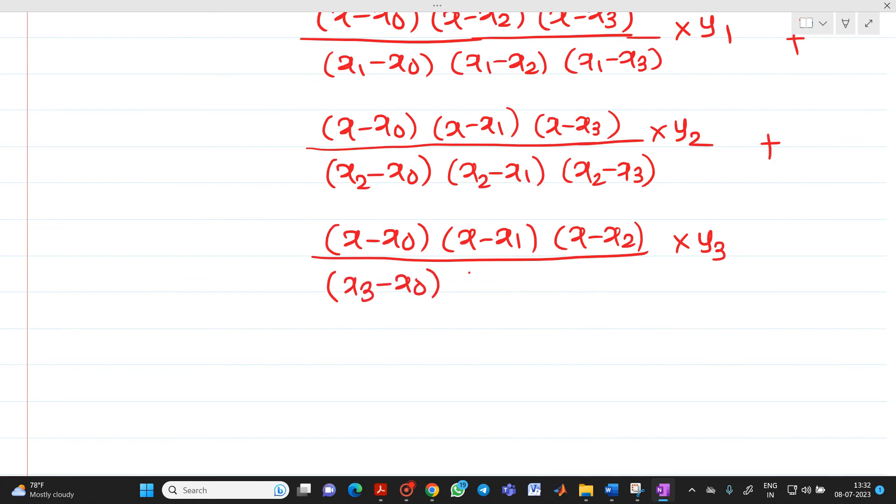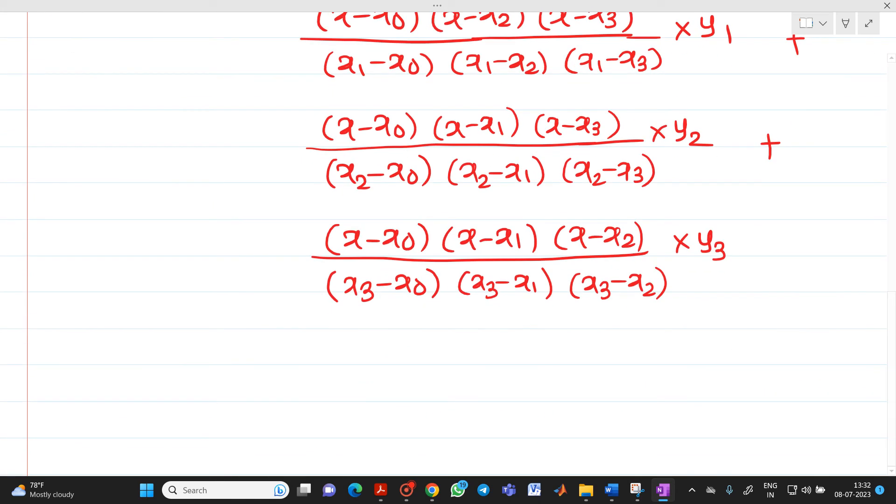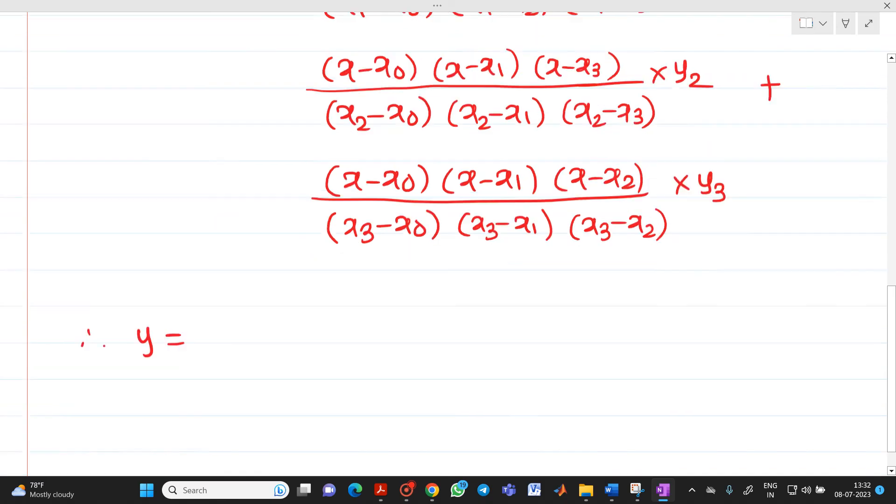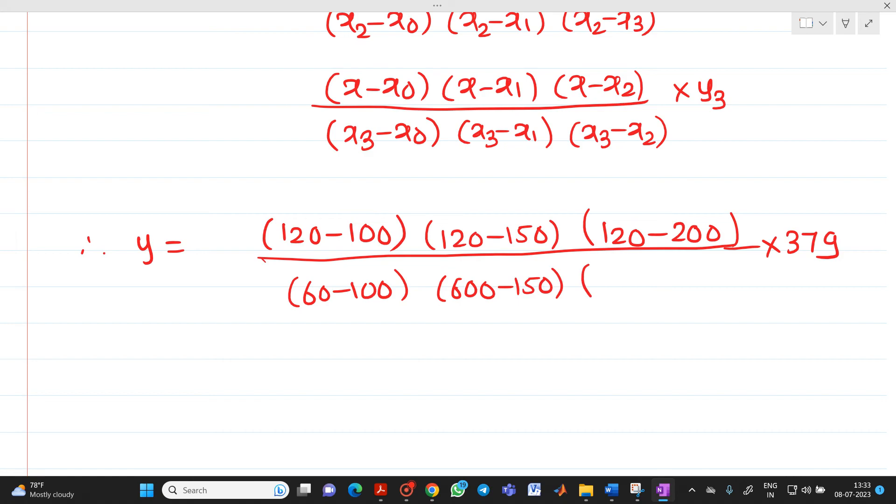So, we know all these values of X0, X1, X2, X3, Y0, Y1, Y2, Y3. So, let me substitute here for getting value of Y. It will be 120 minus 100 into 120 minus 150 into 120 minus 200, just I have taken all the values from the table. It will be divided by 60 minus 100, 60 minus 150 and 60 minus 200 into 379.